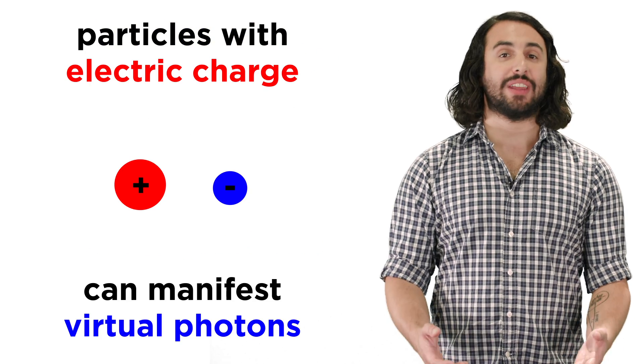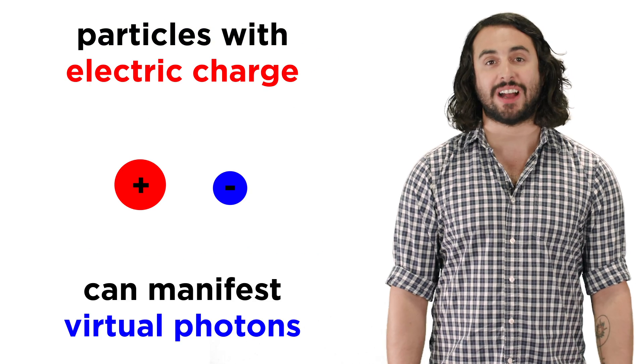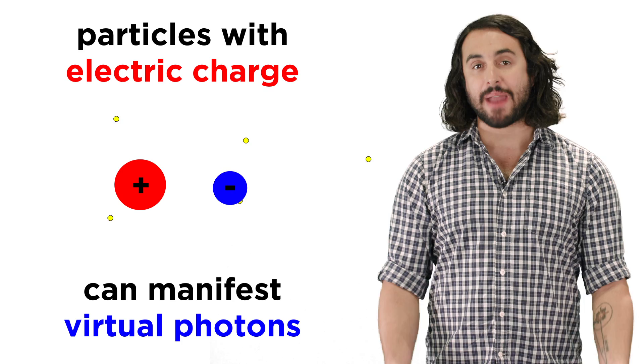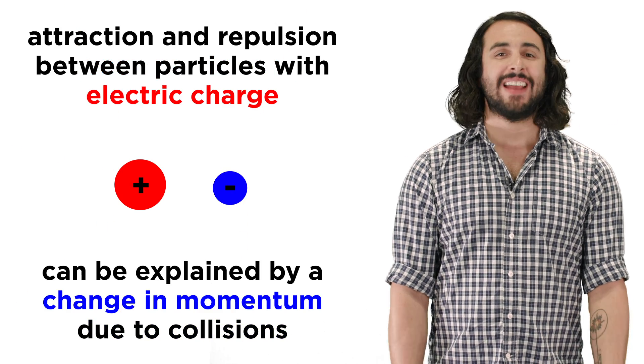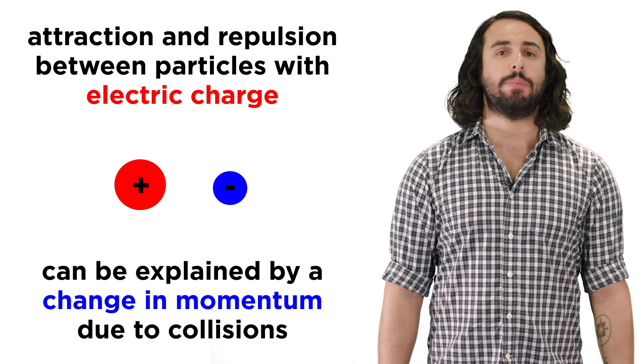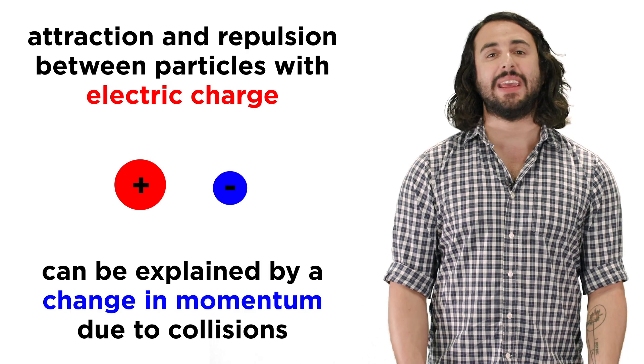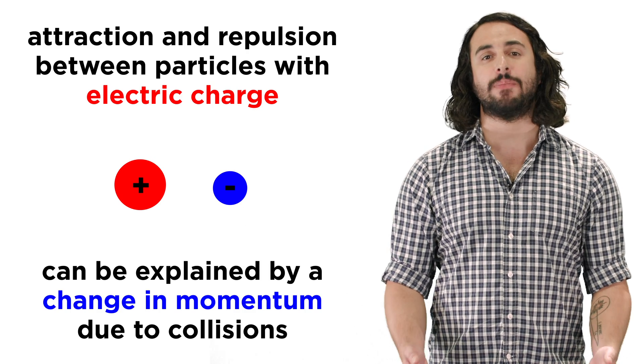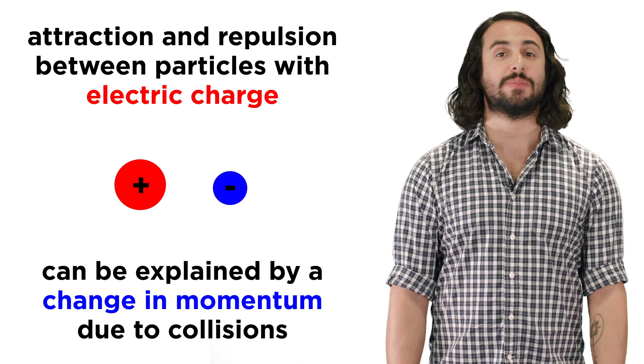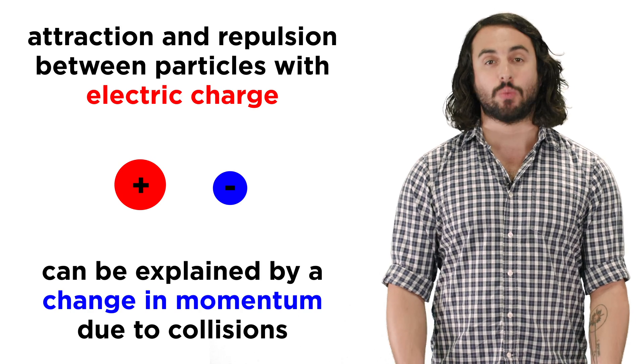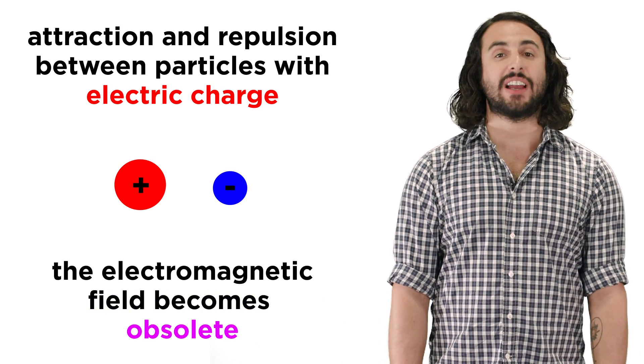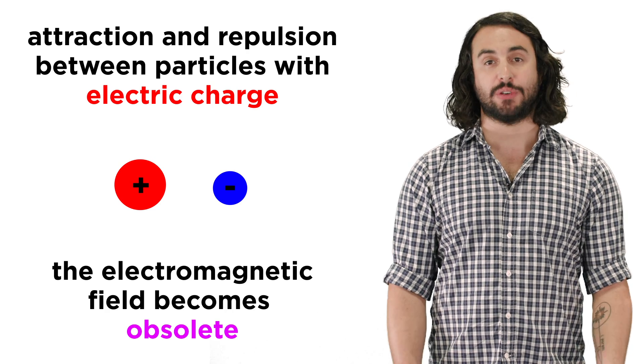But if it were the case that charged particles like protons and electrons were able to manifest these virtual photons, then the attraction and repulsion between charged particles could be explained by the exchange in momentum that occurs during collisions between virtual photons and regular particles. No electromagnetic field would have to be referenced.